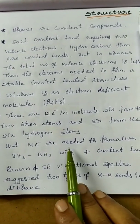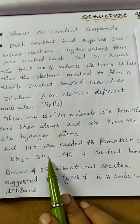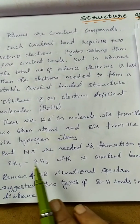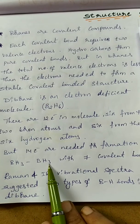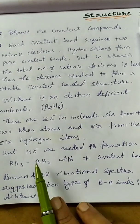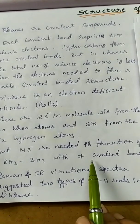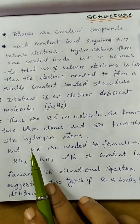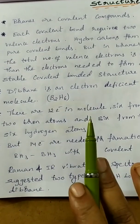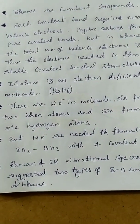But 14 electrons are needed for formation of two BH3 bonds. Each BH3 unit has 3 bonds, so together that is 6 bonds, plus the B-B bond makes 7 bonds total. 7 covalent bonds require 14 electrons. So we only have 12 but need 14 — this is the electron deficiency problem.